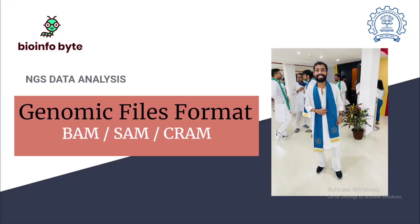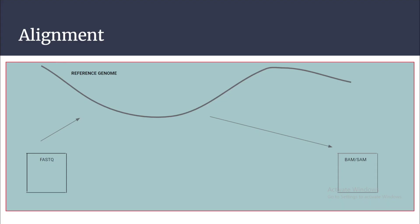Hi everyone, welcome to my channel. Today I will be covering genomic file formats: BAM, SAM, and CRAM. Before going into the file format, I want to start with alignment. The input for alignment is the raw FASTQ files having all the information related to the reads. Alignment is the process of taking all the reads from the FASTQ files, mapping each read to the reference genome, and finding where it comes from in your genome.